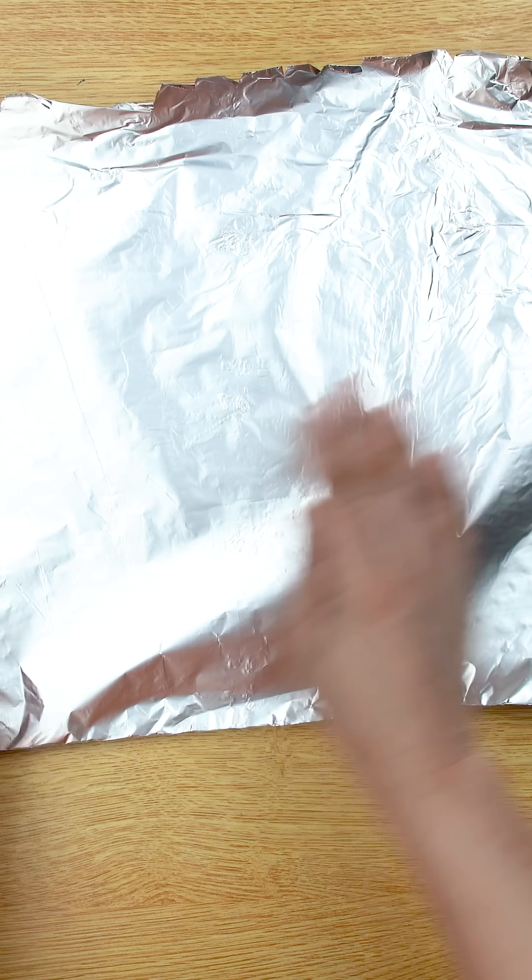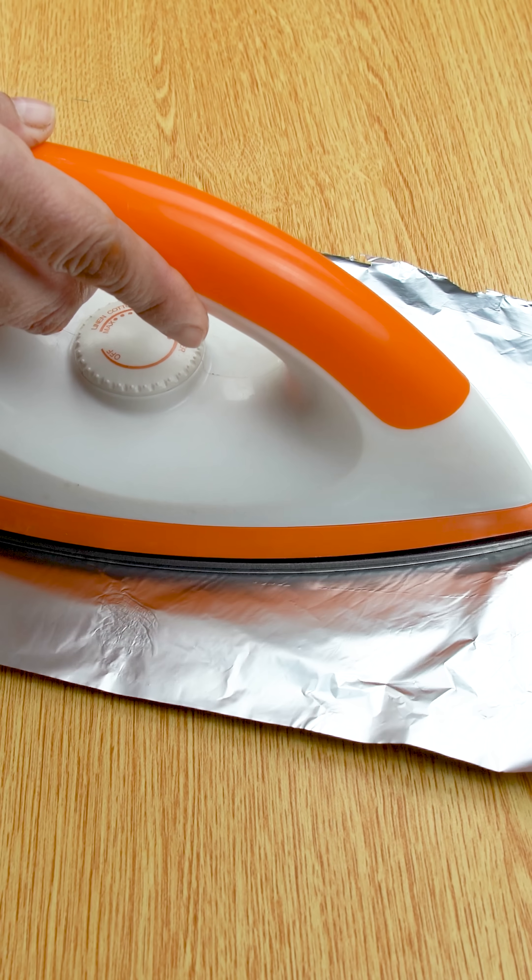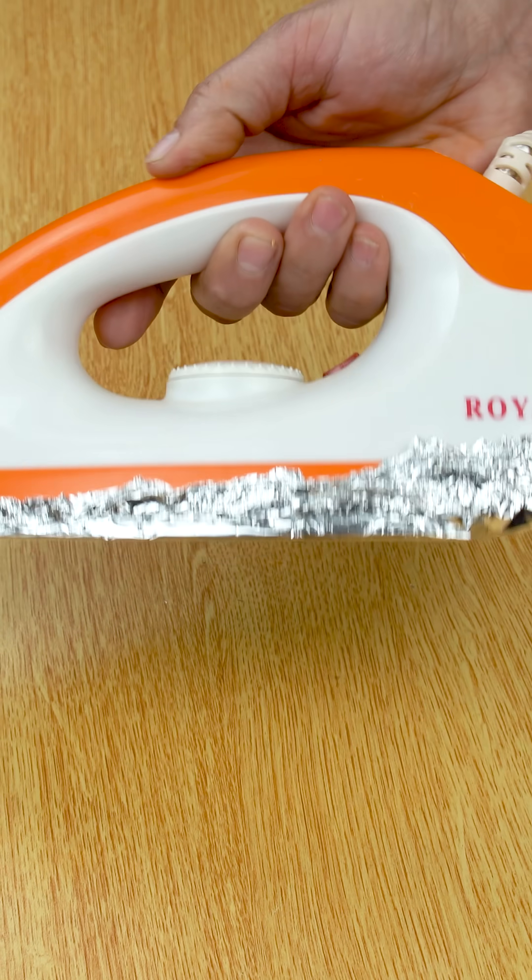First, take a piece of aluminum foil. Now place the iron on top of the foil. Carefully press it to shape the foil. Once the aluminum foil has the shape of the iron, lift it up.